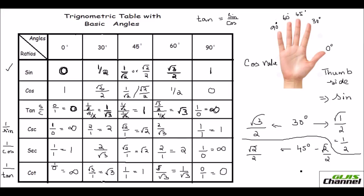For 60°, the ring finger is 60°, so leave that down. On the cosine side you have 1 finger, and on the thumb (sine) side you have 3 fingers. Find the square root and divide by 2: sine 60° = √3/2, and cosine 60° = √1/2 = 1/2.